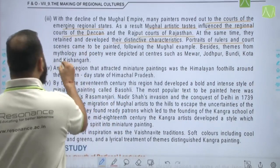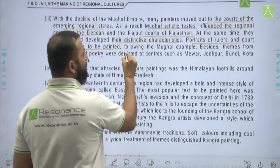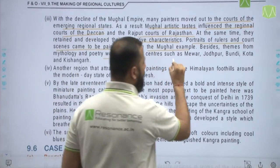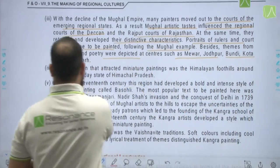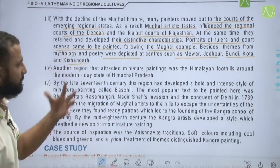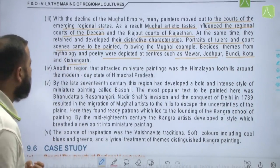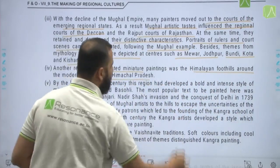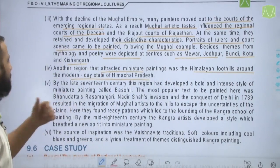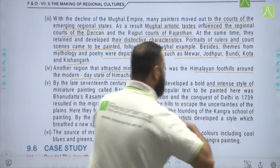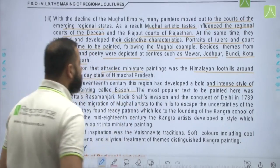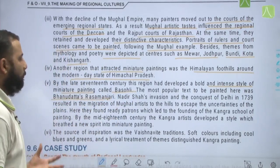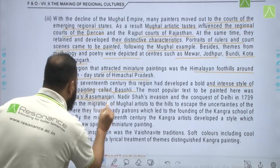Portraits of rulers and court scenes came to be painted following the Mughal example. Besides these, themes from mythology and poetry were depicted at centres such as Mewar, Jodhpur, Bundi, Kota, and Kishangarh. Another important region was the Himalayan foothills, where by the late 17th century a bold and intense style called Bashohli had developed. The most popular text painted here was Bhanu Datta's Rasa Manjari.